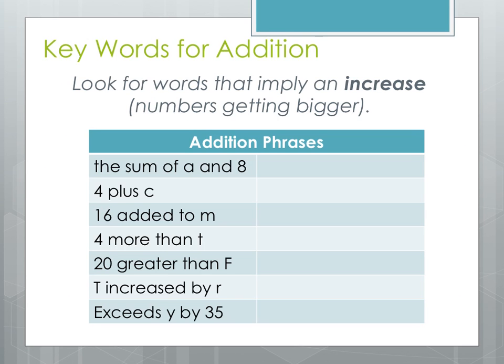Here are some keywords for addition problems. You want to look for anything that implies an increase or numbers getting bigger — things going up, climbing, that sort of thing. So listed here in this table are some key phrases for addition. The sum of A and 8 — sum is a key word for addition, so that translates to A plus 8. 4 plus C translates to 4 plus C. 6 added to M — the word 'to' implies the order gets switched, so we start with M and then add 6. Order is really important when translating to an algebraic expression.